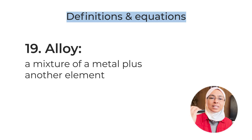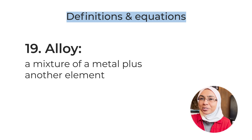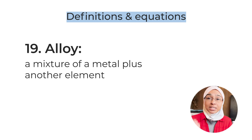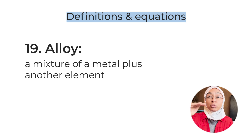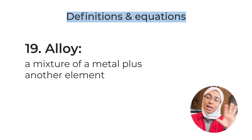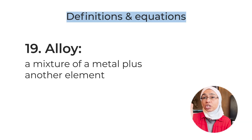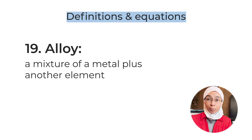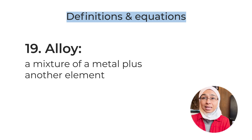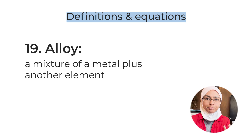Definition number nineteen: alloys — a mixture, not a compound. I've seen students choose 'compound' in multiple choice — do not do this. An alloy is a mixture of a metal plus another element, which could be a metal or non-metal. For example, steel is iron plus carbon, where carbon is a non-metal. In an alloy there is no chemical bonding between the components — they are simply mixed together.